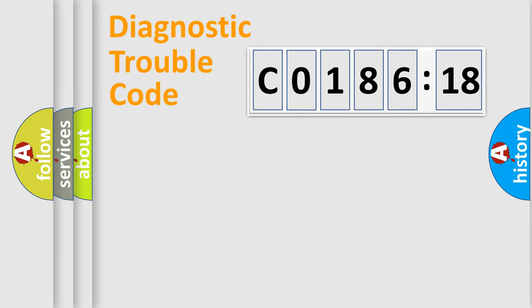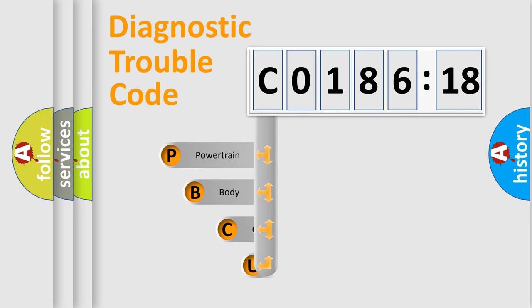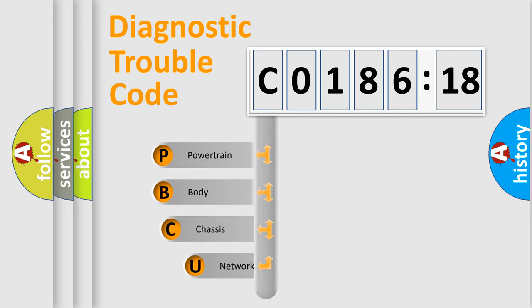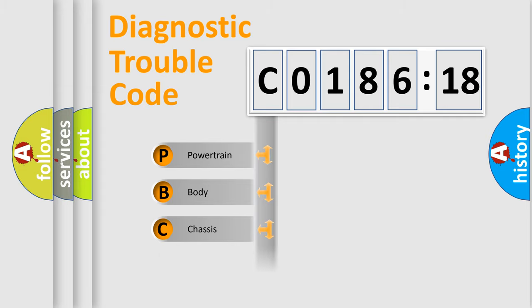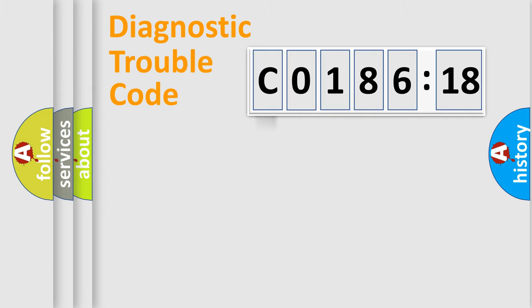Let's do this. First, let's look at the history of diagnostic fault code composition according to the OBD2 protocol, which is unified for all automakers since 2000. We divide the electric system of an automobile into four basic units: Powertrain, Body, Chassis, and Network.